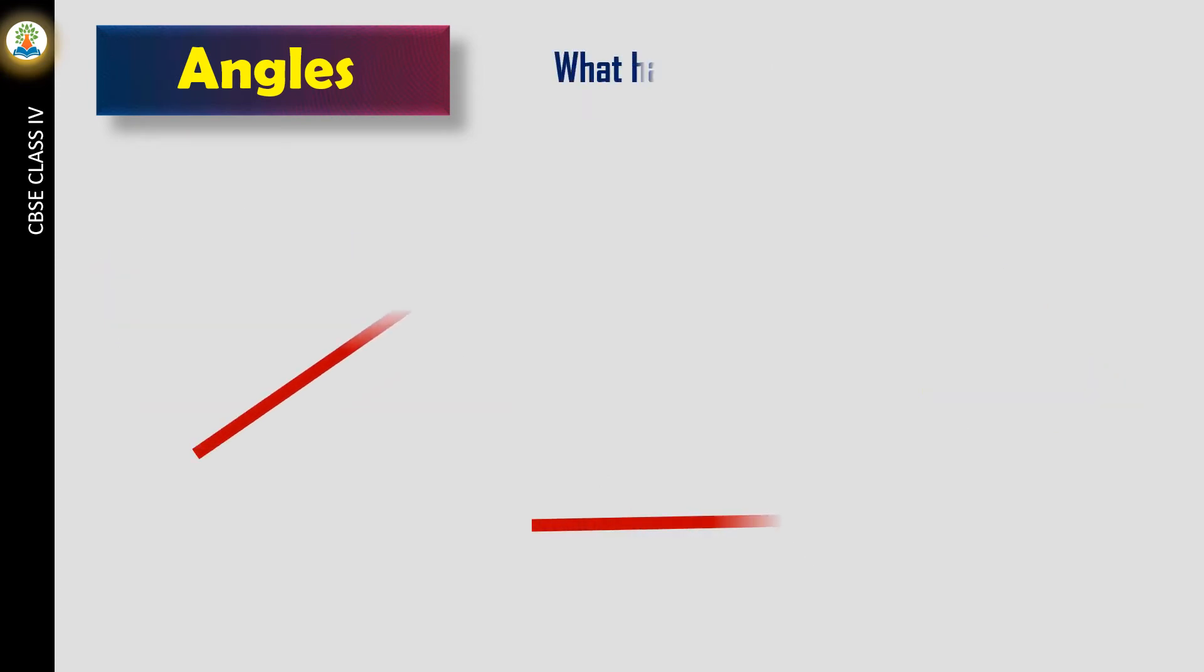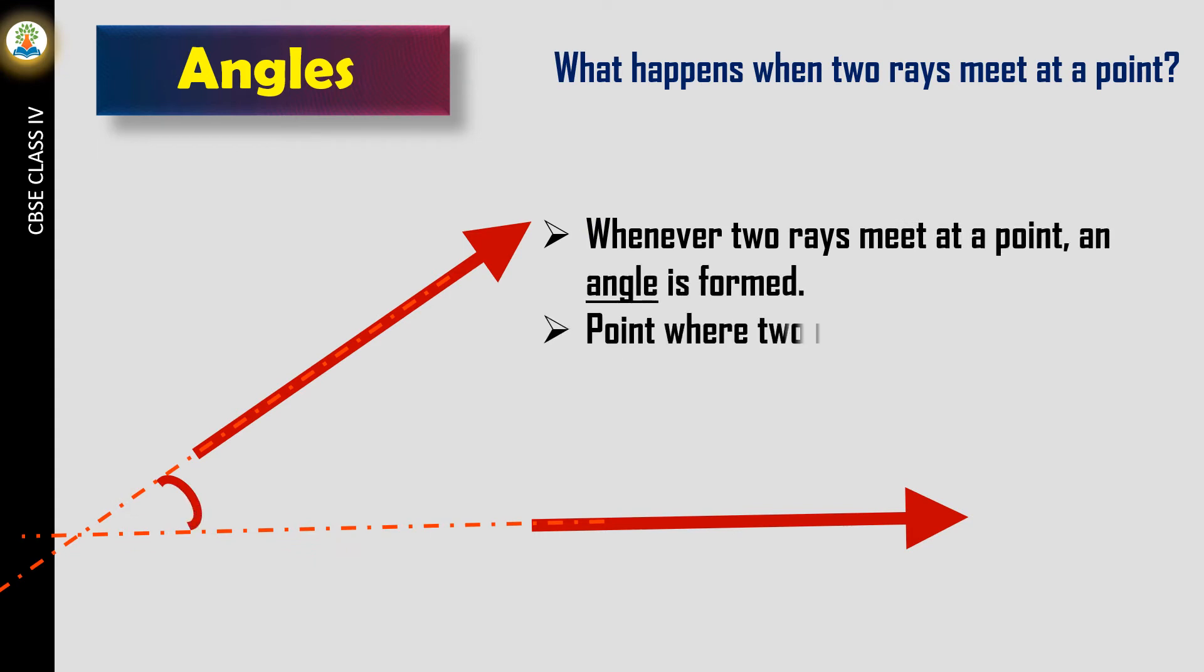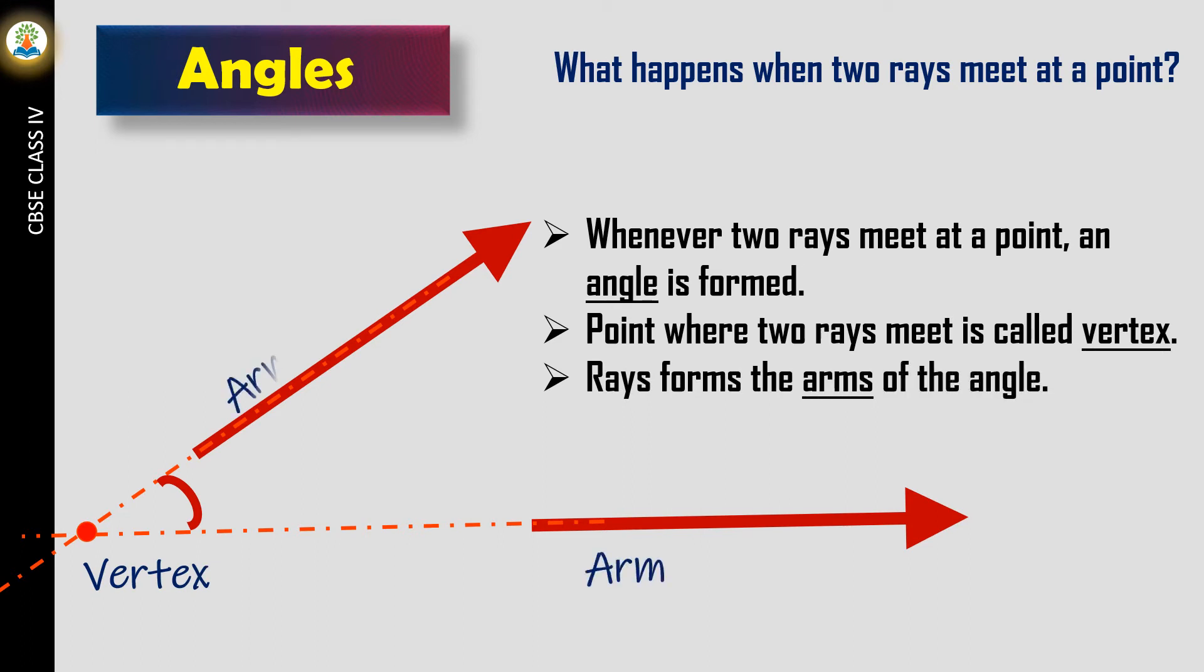What happens when two rays meet at a point? Whenever two rays meet at a point, an angle is formed. The point where two rays meet is called the vertex. The rays form the arms of the angle.